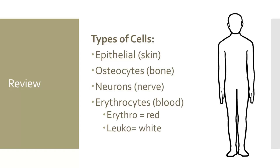There are four main types of cells, including epithelial or skin cells, osteocytes or bone cells, neurons which are nerve cells, and erythrocytes which are blood cells. Blood cells can be broken down into red and white — erythro is red, and leuco is white blood cells. Each type of cell can be broken down further. Those that destroy that type of cell have the suffix '-clast' behind them. Those that generate that type of cell have the suffix '-blast' at the end. For example, blood cells that break down other worn-out blood cells are called erythroclasts, and blood cells that generate other blood cells are called erythroblasts.